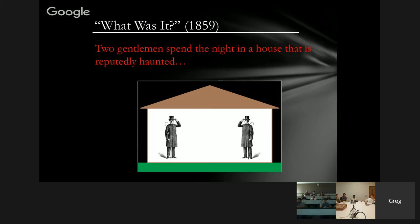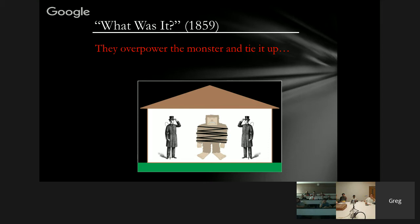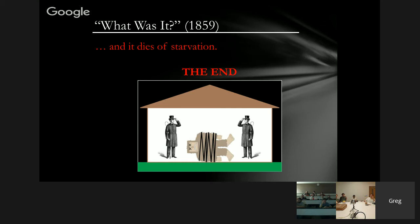Here's a short summary of the story: two guys hear that there's a house that seems to be haunted, so they decide to spend the night in it. They get attacked by an invisible monster, overpower and tie it up, and it dies. Not really a compelling bit of literature, but what's noteworthy is that this is the first story where somebody tried to really explain how invisibility might work. One of the characters reasons that it's "not theoretically impossible to make a glass so pure and homogeneous in its atoms that the rays from the sun shall pass through it as they do through the air, refracted but not reflected."